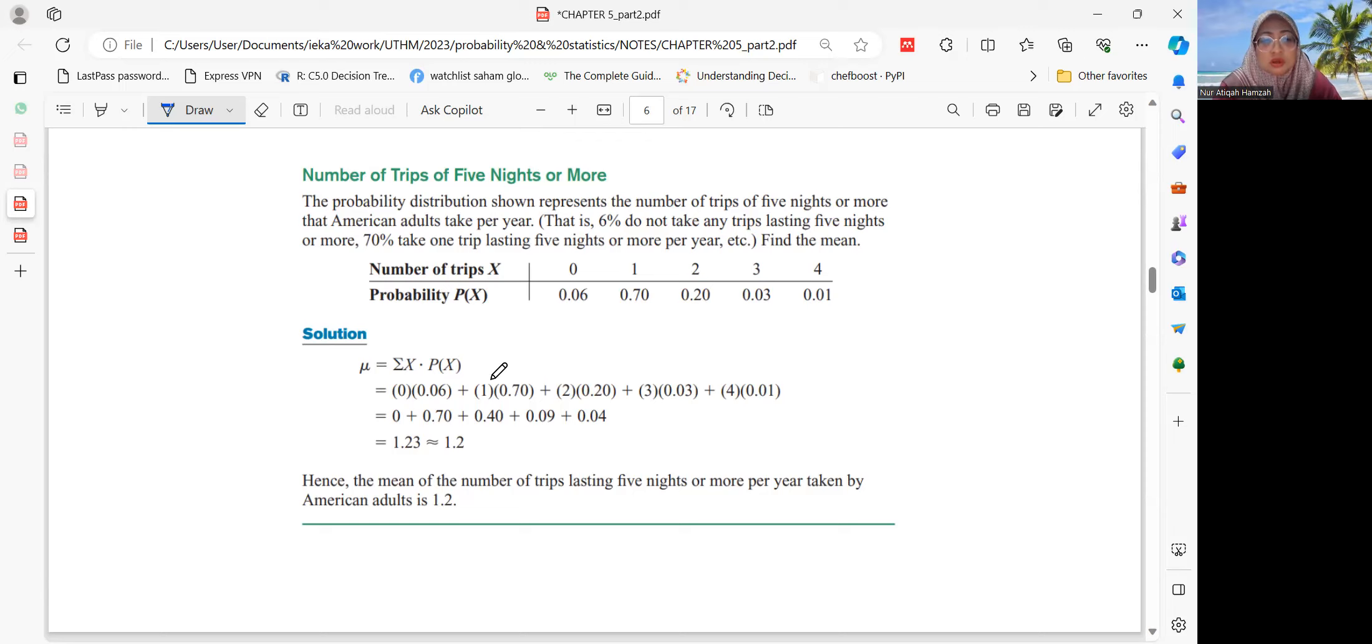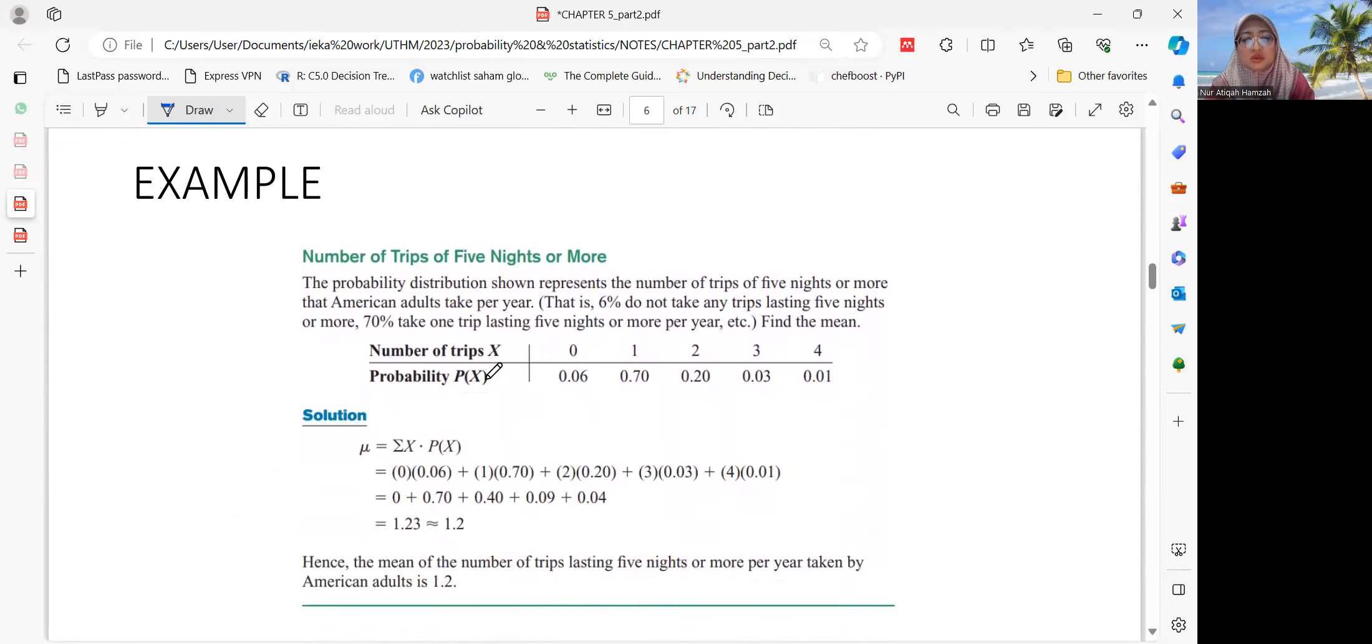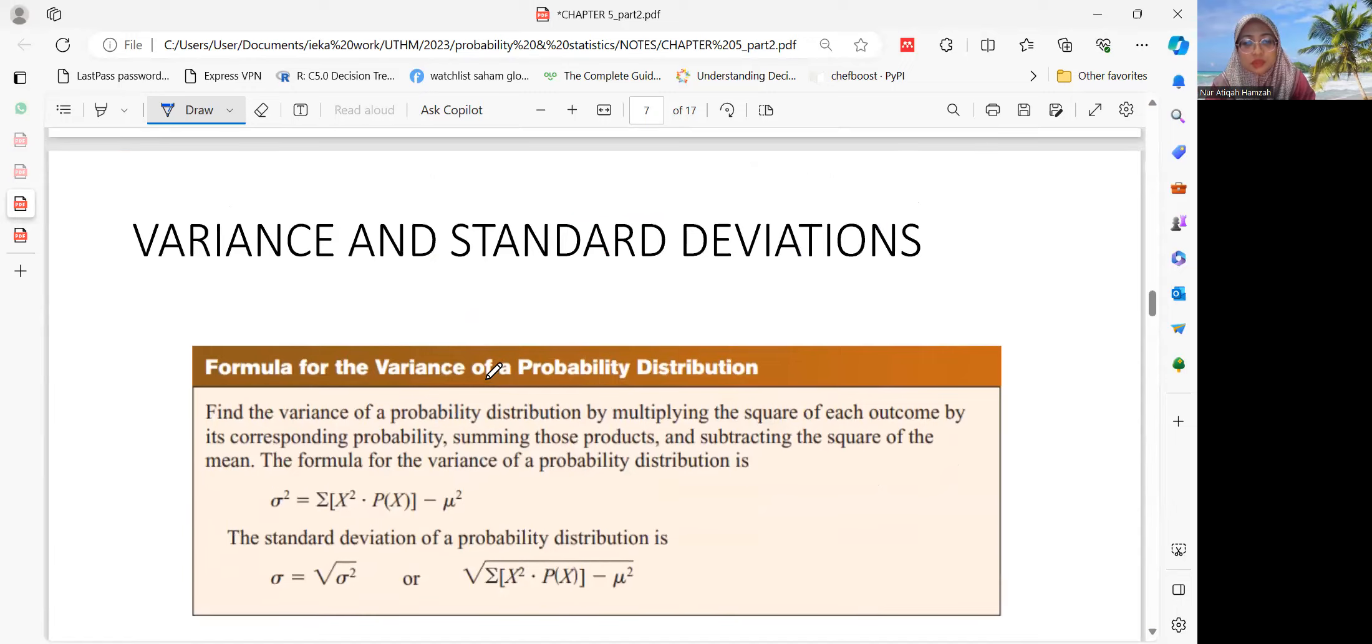So kalau kita lihat kat sini, we find that 70% of American adults go on trips for five nights and more but only once. So let's calculate. Mu is equal to summation of x P(x). So kita multiply our x with P(x) and total them up. We get 1.23. So the mean of the number of trips lasting five nights or more per year taken by American adults is 1.2. Kalau kita fikir logik pun, macam mana nak dapatkan 1.23? That's why there was a disclaimer earlier stating that this calculation is the theoretical average.